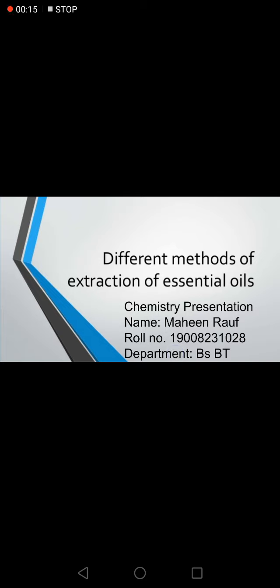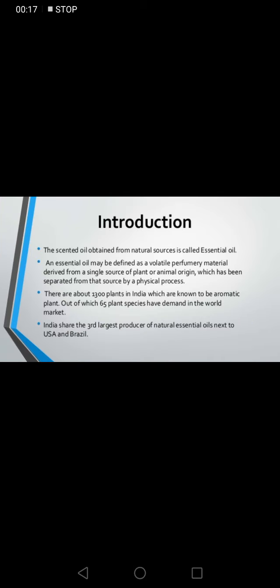Introduction: the scented oil obtained from natural sources is called essential oil. Essential oil may be defined as volatile perfumery material derived from a single source of plant or animal origin, which has been separated from that source by a physical process. There are about 1300 plants in India which are known to be aromatic plants.